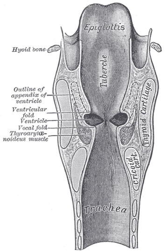Speech production requires airflow from the lungs to be phonated through the vocal folds of the larynx and resonated in the vocal cavities shaped by the jaw, soft palate, lips, tongue, and other articulators.